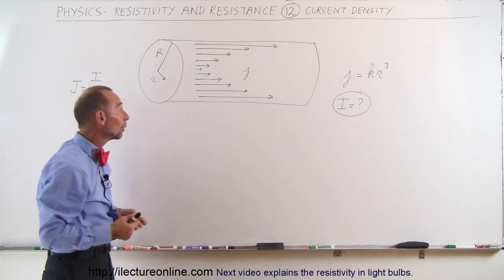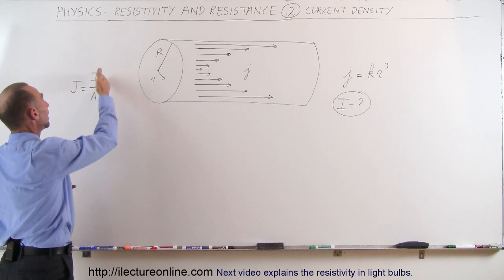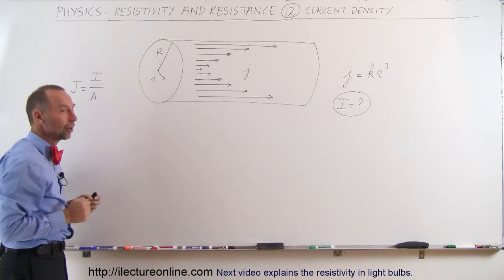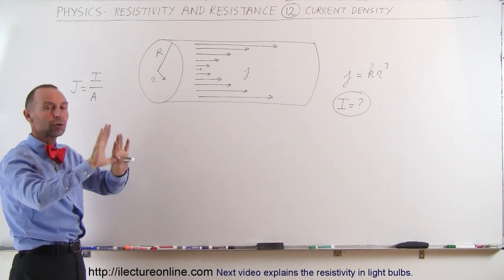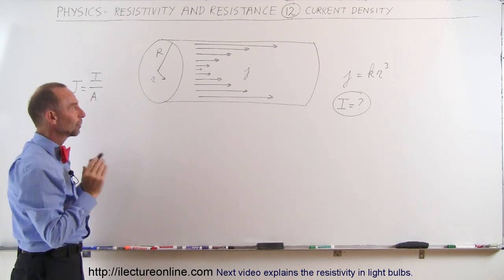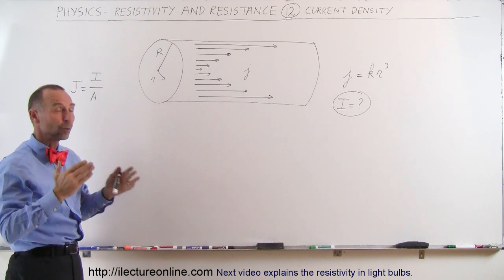But what is current density? Well current density by definition is current divided by unit area. So if the current density was uniform you have the same amount of current everywhere through the conductor. But here you can see that it varies with radius.